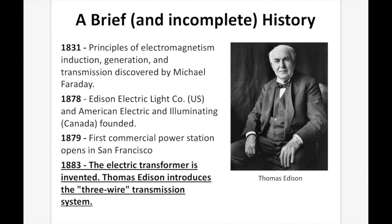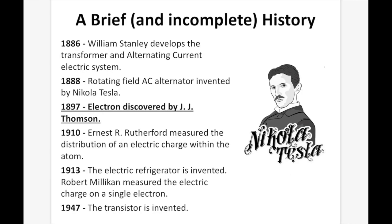The Edison Electric Light Company was created in 1878, and in 1879, the first commercial power station opened in San Francisco. In 1883, the electric transformer was invented, and Thomas Edison introduced the three-wire transmission system. In 1886, William Stanley developed the transformer and alternating current electric system. The rotating field AC alternator was invented by Nikola Tesla in 1888, and the electron was discovered officially by J.J. Thomson. Ernest Rutherford, in 1910, measured the distribution of electric charge within the atom, and Millikan took that a step further in 1913 by measuring the electric charge on a single electron. And in 1947, the transistor was invented.